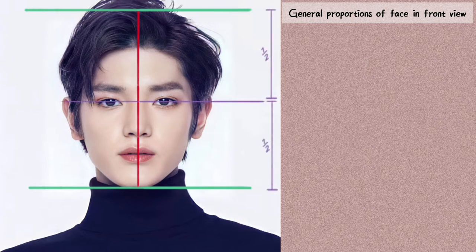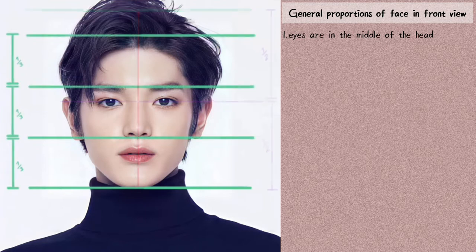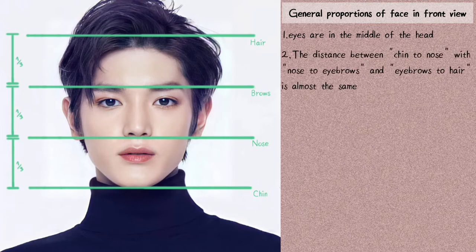As you can see, the eyes are exactly in the middle of the head, which is an easy proportion to remember. The second thing to know is that the distance from chin to the base of the nose is almost the same as the distance from nose to eyebrows, and eyebrows to hairline. These are the thirds of a face, and they're so important because they help us draw other features much easier.